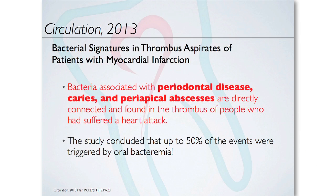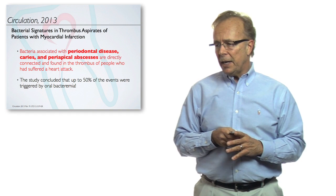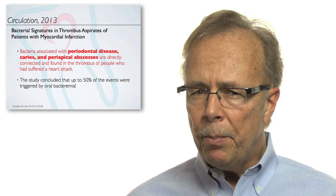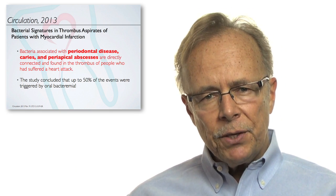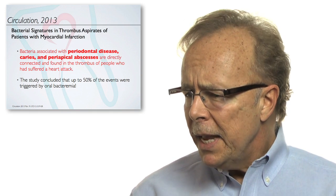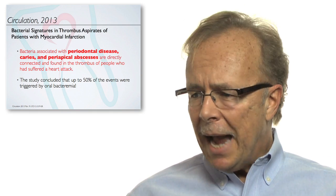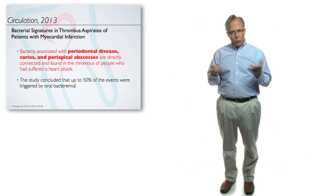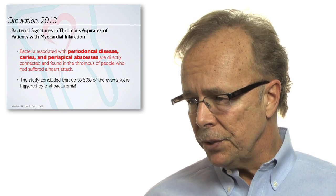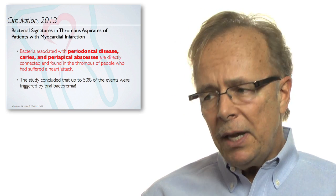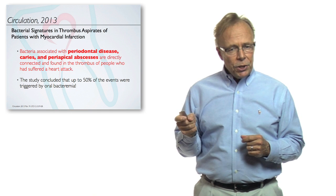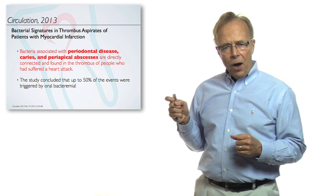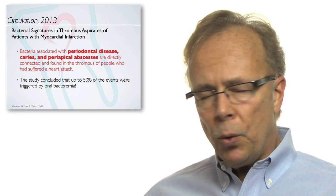The title is 'Bacterial Signatures in Thrombus Aspirates of Patients with Myocardial Infarction.' It investigates what bacterial components are present in the blood clots of people having heart attacks. The paper found that bacteria associated with periodontal disease — aka gum disease — caries, also known as cavities, and periapical abscesses, which are abscessed teeth, are directly connected and found in the blood clots of people who suffered heart attacks.